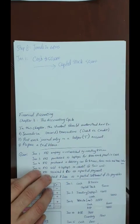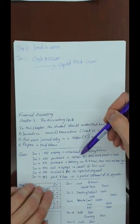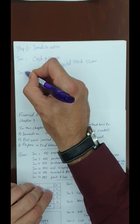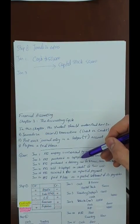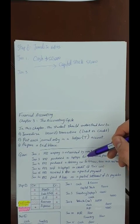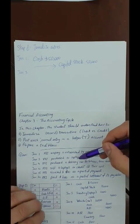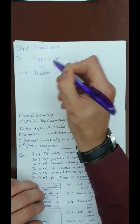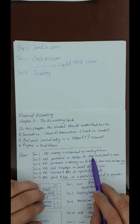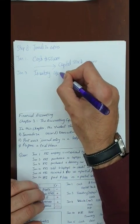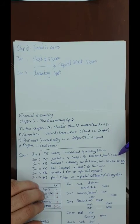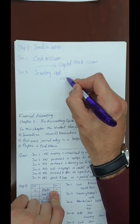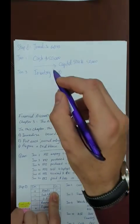Jan 3 — the company purchased 10 laptops for $400 each, paid in cash. Those laptops are used for main operations, so they are inventory. Inventory increases by 10 × $400 = $4,000 on the debit. All paid in cash, so cash decreases — assets decrease by credit. DR Inventory $4,000, CR Cash $4,000.